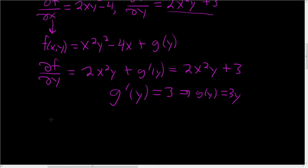So finally, we have f. So f(x,y) is going to be x²y² - 4x + 3y. Is that the answer?